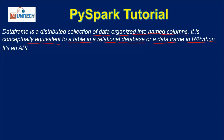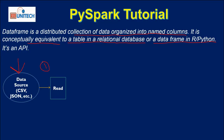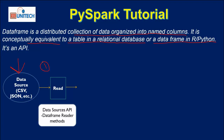In simple terms, a DataFrame is an API. To understand how it works in real time, let's look at the data flow. First, we have some source data — for example, a CSV file, JSON file, or any other format. To read that data, we need an API called the Data Source API, which uses the reader method.